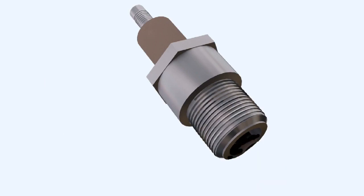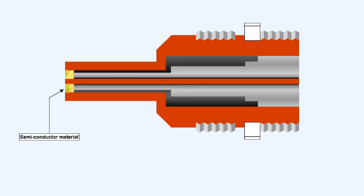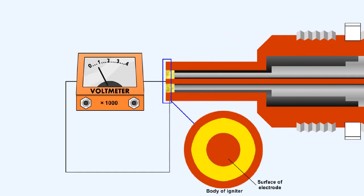A more modern version of the igniter plug is the surface discharge igniter plug shown here. The end of the insulator of the surface discharge igniter plug is formed from a semiconductor material. The semiconductor material allows an electrical leakage to occur between the hot electrode to the body of the igniter. The electrical leakage ionizes the surface of the semiconductor material, which provides a relatively low resistance path for the energy stored in the capacitor.